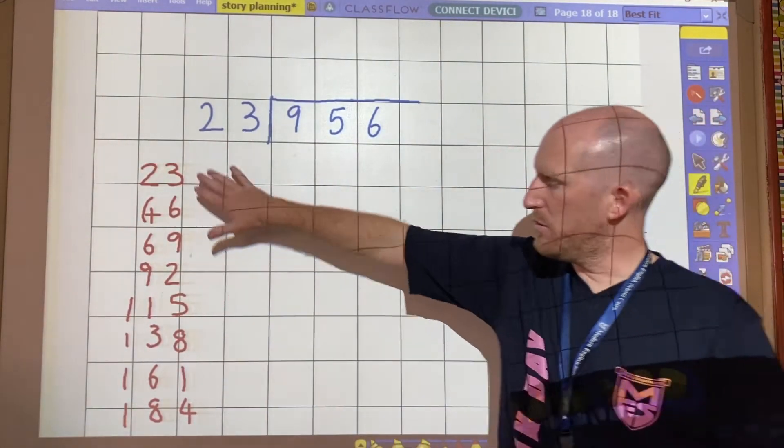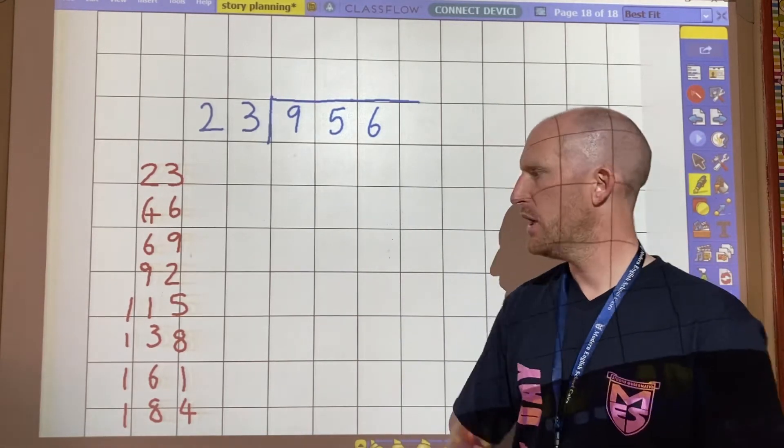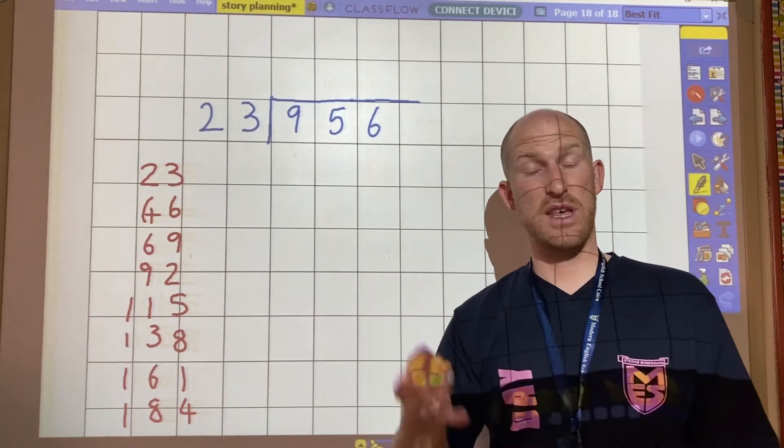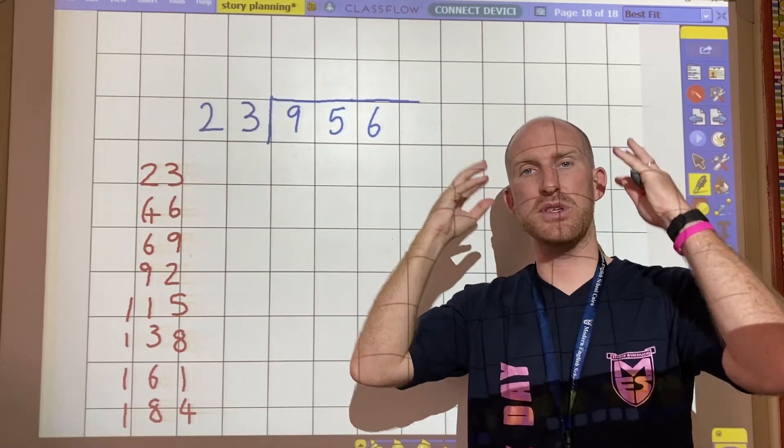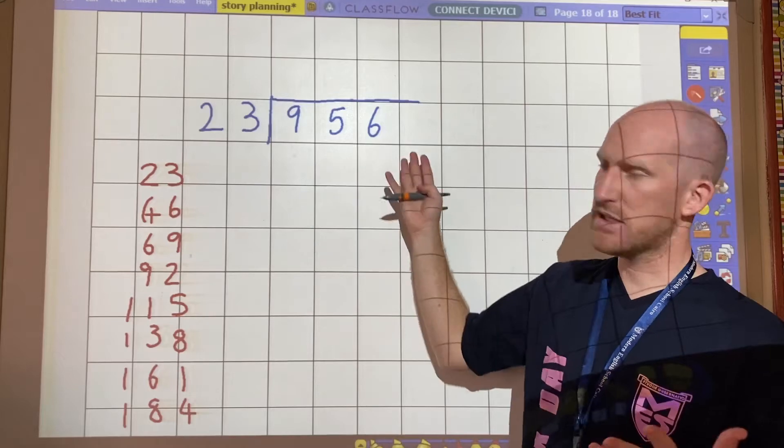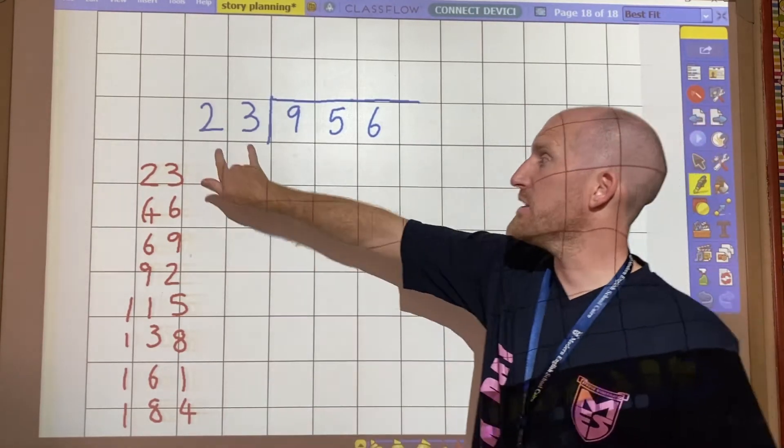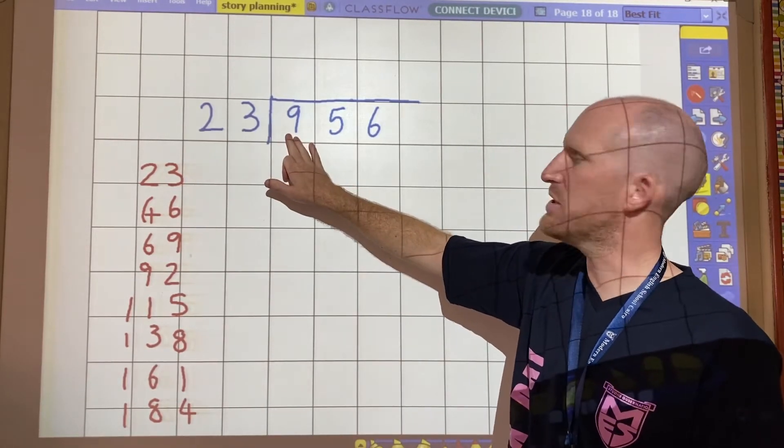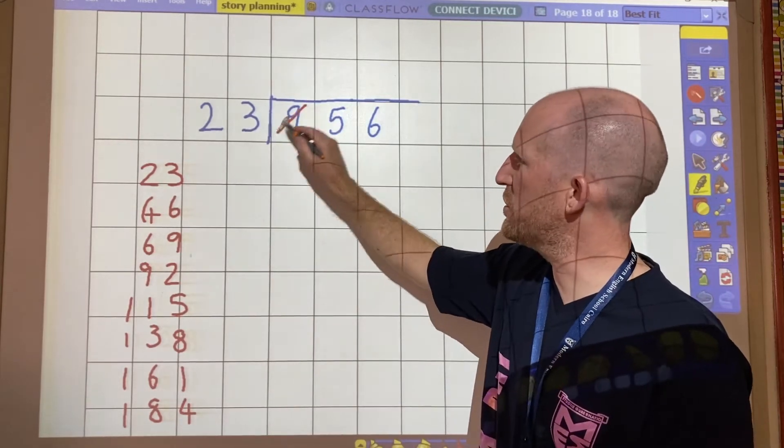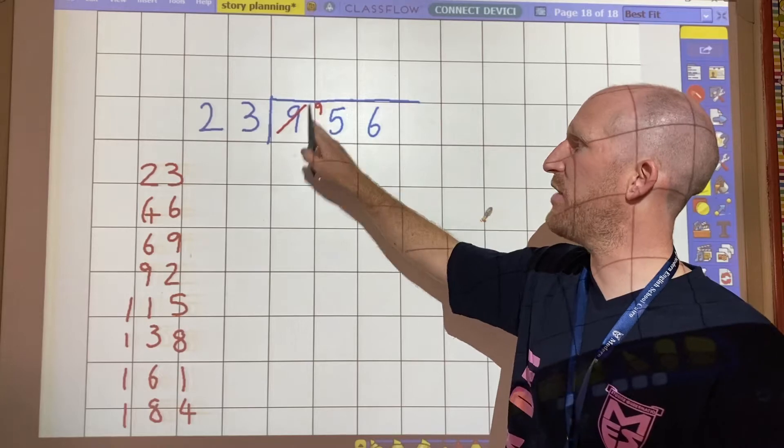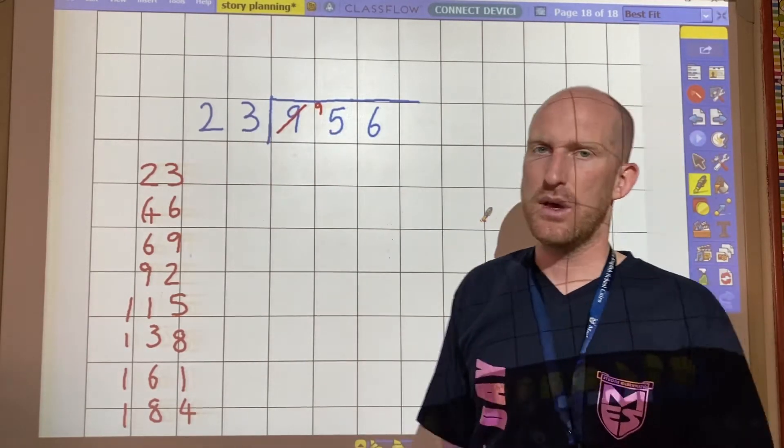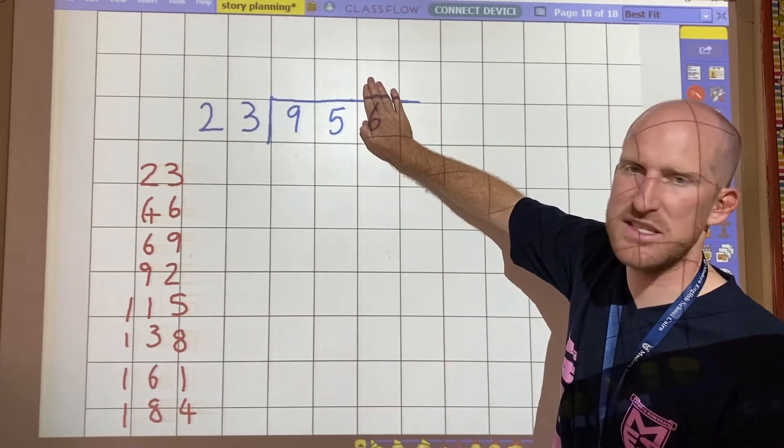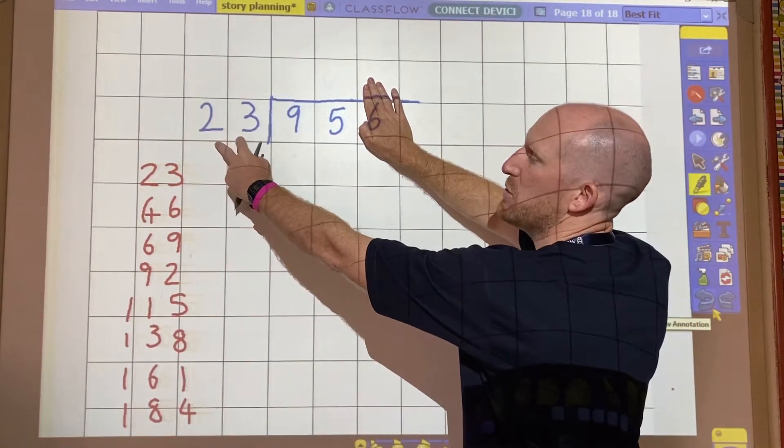When I am happy with the numbers that I have written down now I can actually start the question. If you do not do this then there is a very good chance that you will get the answer wrong because there's too many big numbers to keep inside of your head. So the next thing I do is the same as short division. I ask myself how many 23s are in 9? Well I can't do that so I need to carry this number. Now in short division I would cross the number out and put it next to the 5 and say how many 23s in 95. In long division though we keep the 9 where it is and I just pretend the 6 isn't there and I say to myself how many 23s in 95.